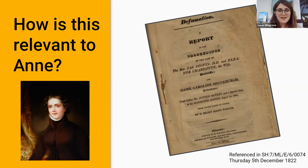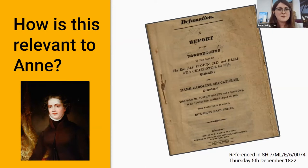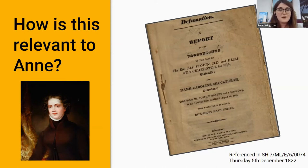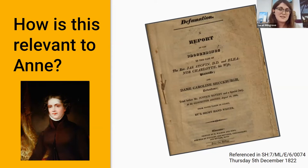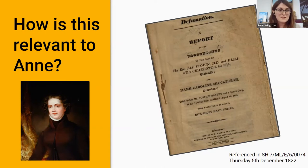A great example of a pamphlet that Anne read is on the screen: a report of the proceedings in the case of the Reverend James Stoven and Eleanor Charlotte, his wife, and Dame Caroline Schuckberg, defendant. Anne read this in December of 1822. Earlier in his life in 1792, only a year after Anne was born, he published Advice to the Poor, with a short remonstrance to those in higher circumstances. Anne doesn't comment on the contents of this small unbound report, but she does mention the verdict of the proceedings in her journal. Pamphlets were important in guiding how readers may view the world, and we can infer that it is making her think about how people behave towards each other and what the legal ramifications are when you go against what's acceptable in early 19th century England. The point I want to make here is that we can learn more about Anne and her peers through these kinds of publications, and we shouldn't forget about them.